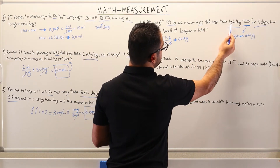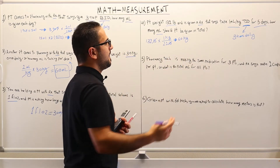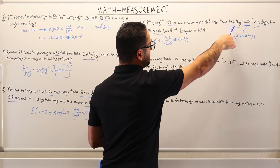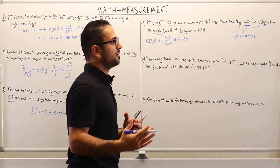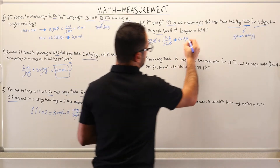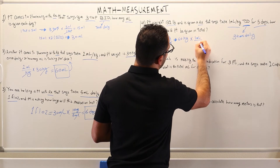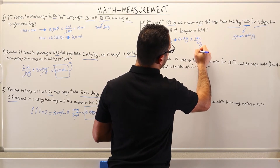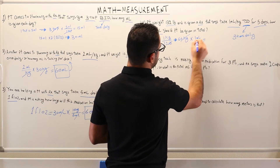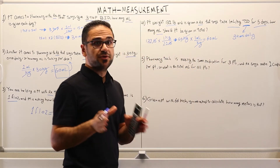The prescription says one milliliter per kilogram. So we multiply the patient's weight by the prescription dose to figure out the number of milliliters per dose. Multiplying 60 kilograms by one milliliter over kilogram — canceling kilograms — that equals 60 times one, which is 60 milliliters per dose.